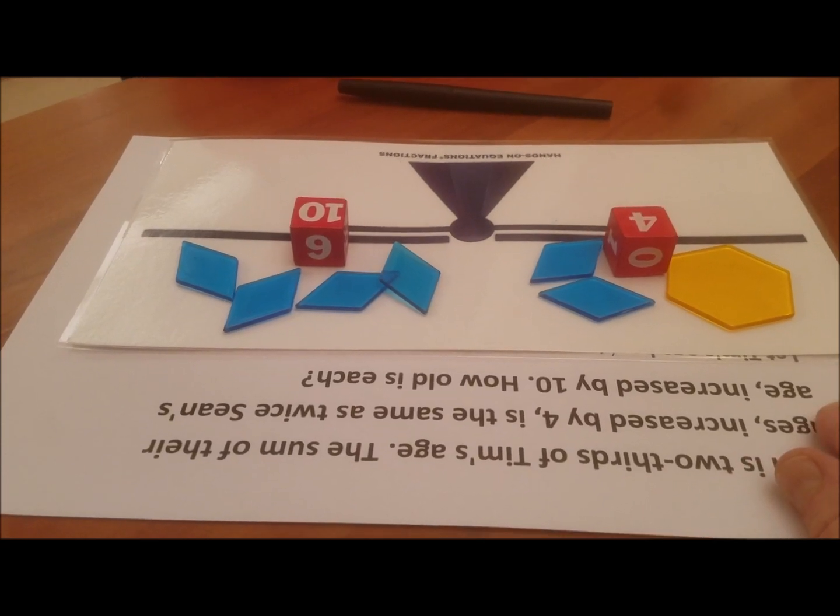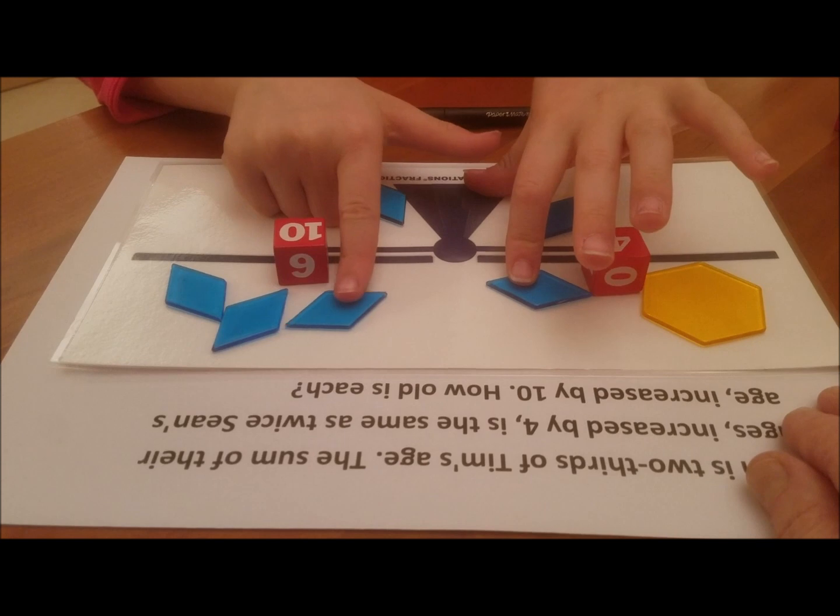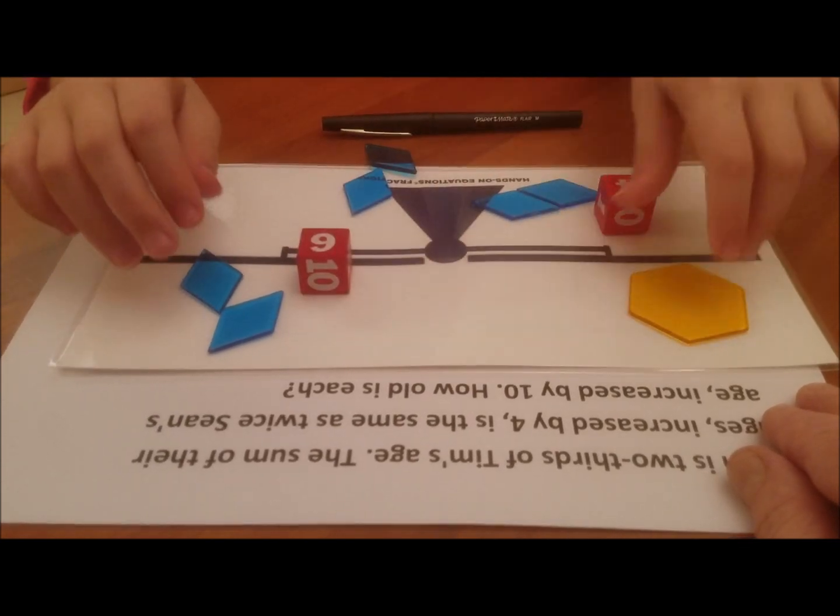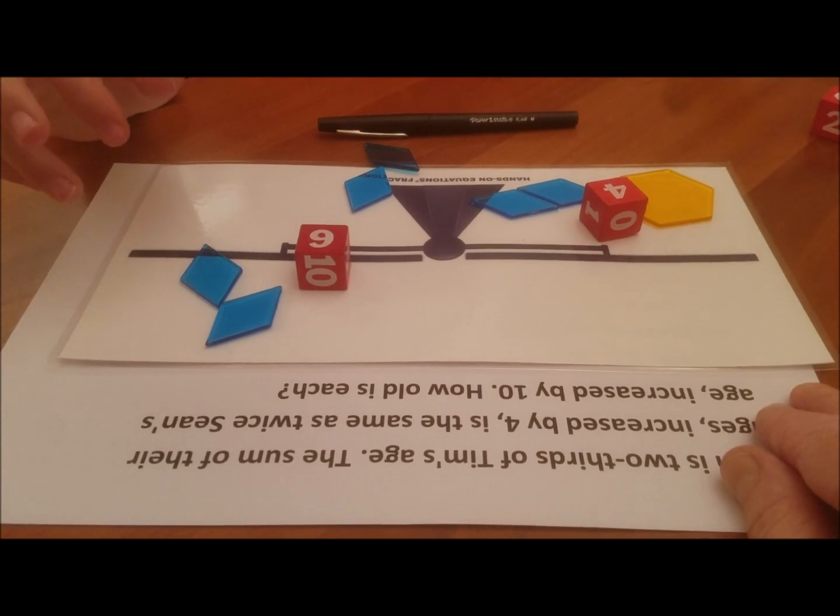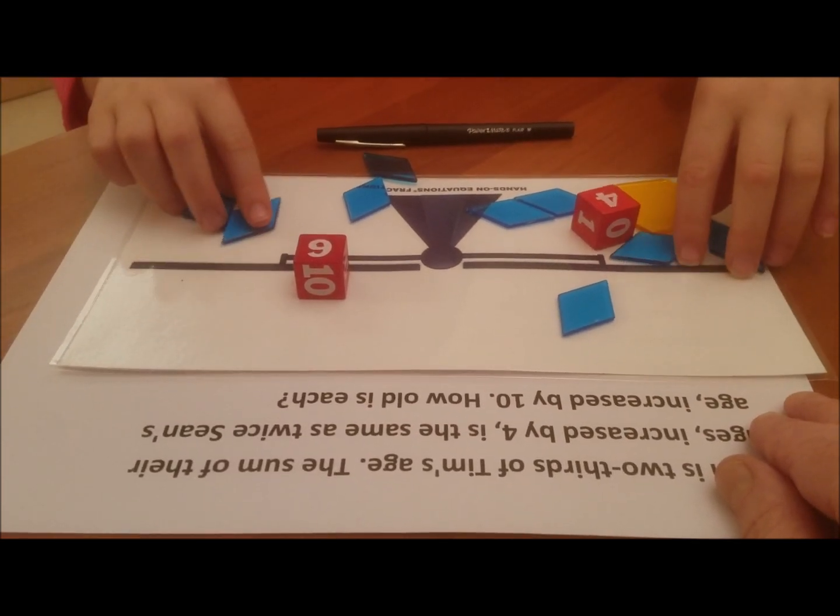Do you see any legal moves we can perform? We can take away a blue block from each side. We can do that a second time. We could take a four value from each side. We could take the yellow block and replace it by three blue blocks. We could take two blue blocks away.